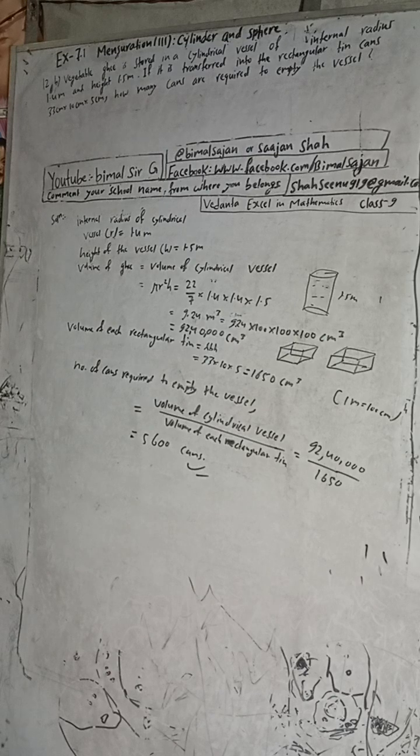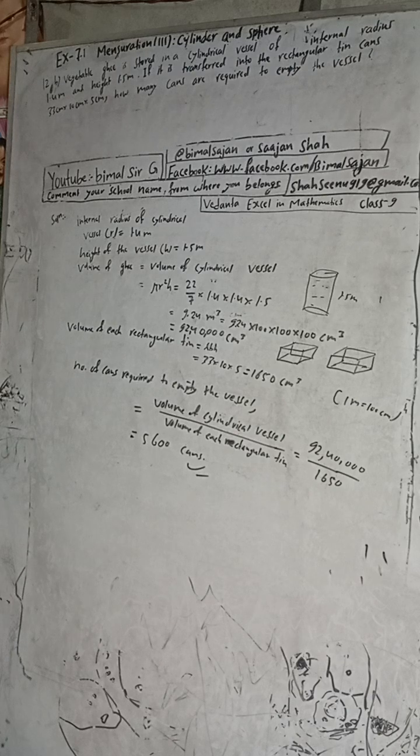The book answer is 56,000 — this is the solution of question 12b. See you in the next videos. If you like the video, share it with your friends. Radhe Radhe, Jai Shri Krishna.